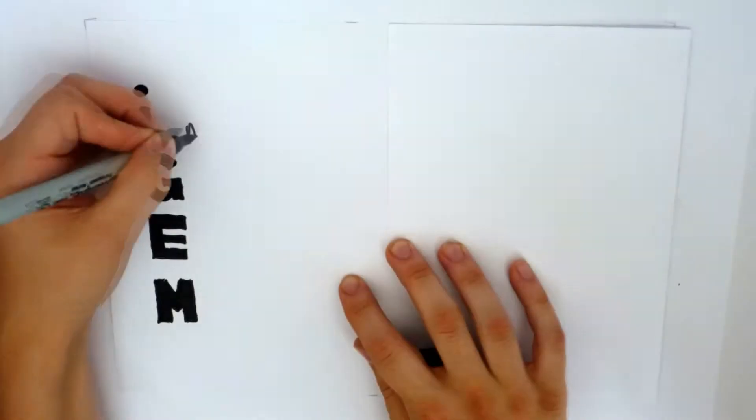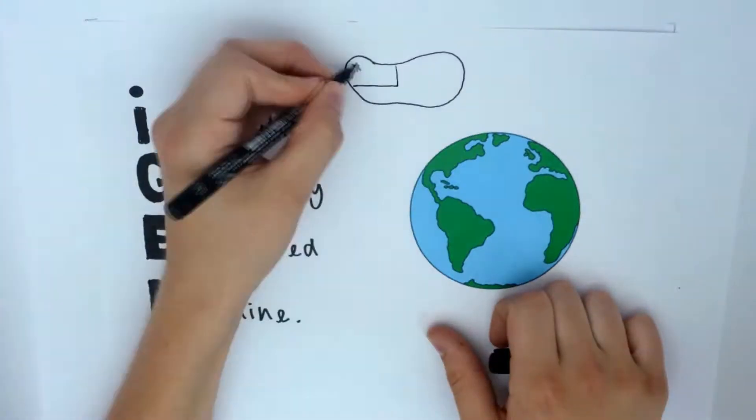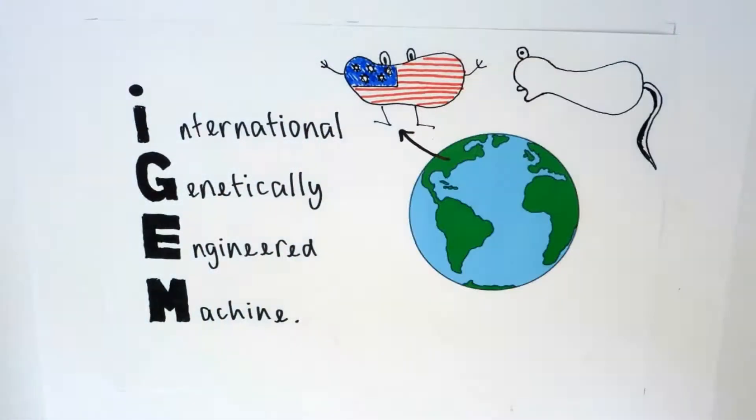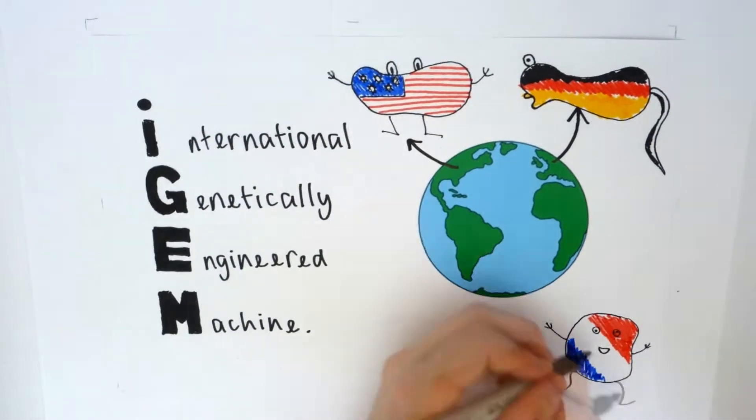iGEM stands for International Genetically Engineered Machine. It gives students from around the world the opportunity to design and create their own synthetic organisms.